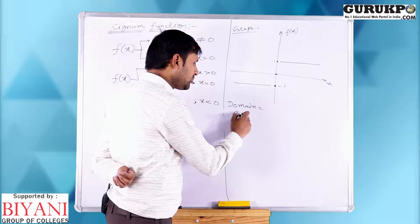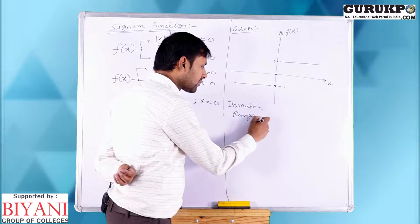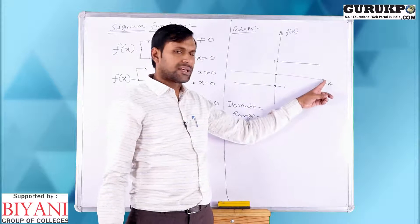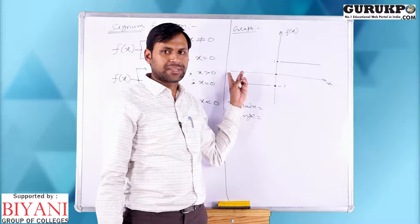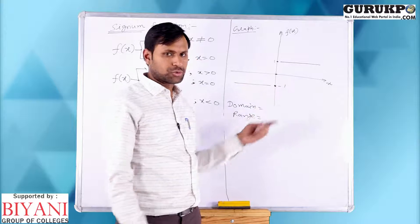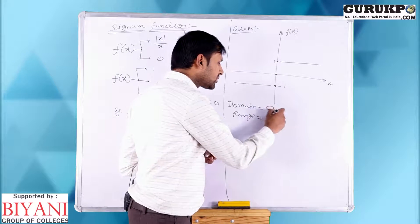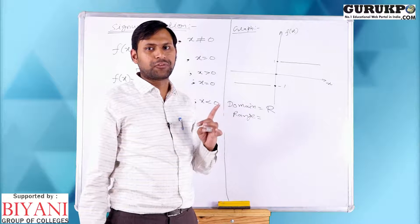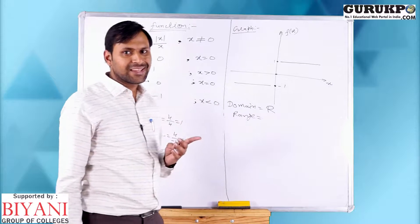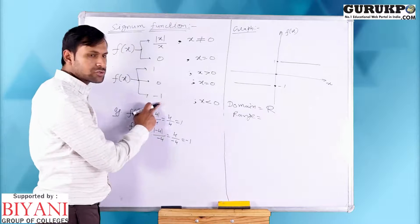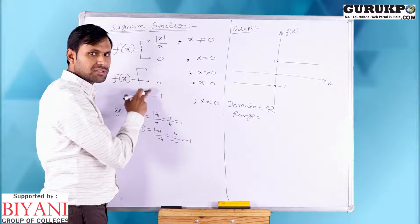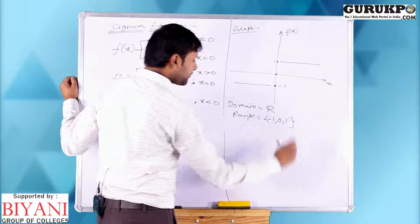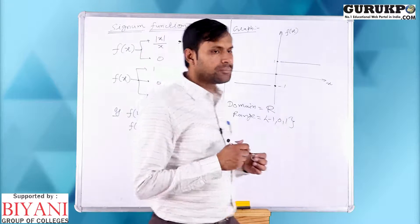Domain of the signum function means possible values of x. x can be positive, negative, or zero, so domain is R, the real numbers. Range means possible values of f(x). Clearly here we get only three values: either 0, 1, or minus 1. So range is {minus 1, 0, 1}.